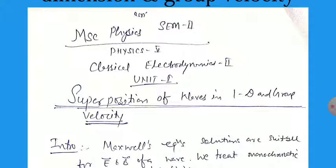As we know very well, superposition means that if more than one wave are superimposed and they interact with each other, then we get superposition. Here we have considered it only for one dimension, and in the UG classes we have also done and calculated the group velocity, which is just like the wave packet — the velocity of the wave packet. So, what does superposition mean? We start from the introduction.